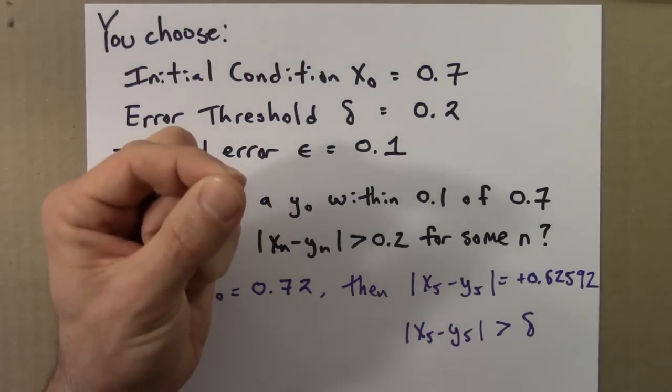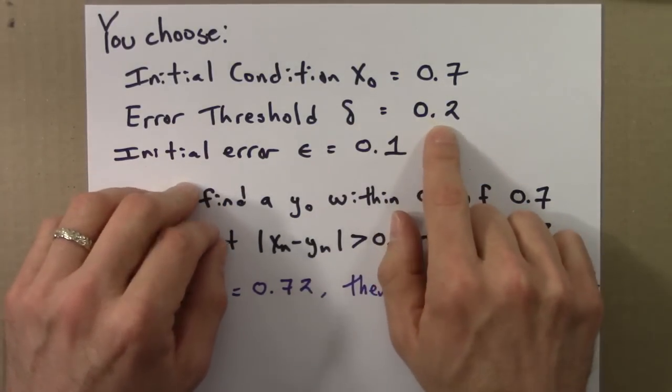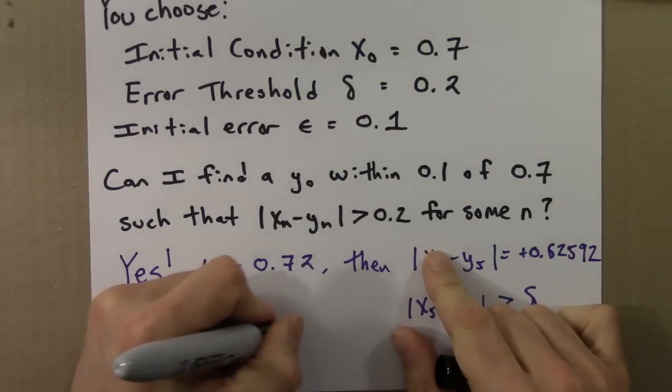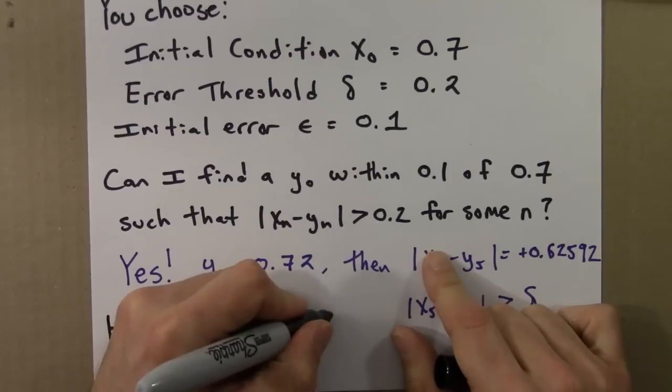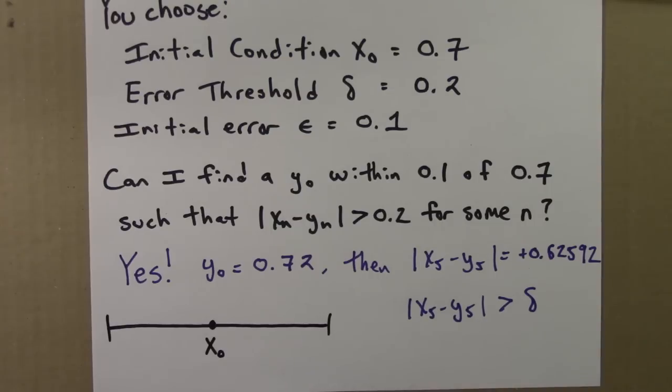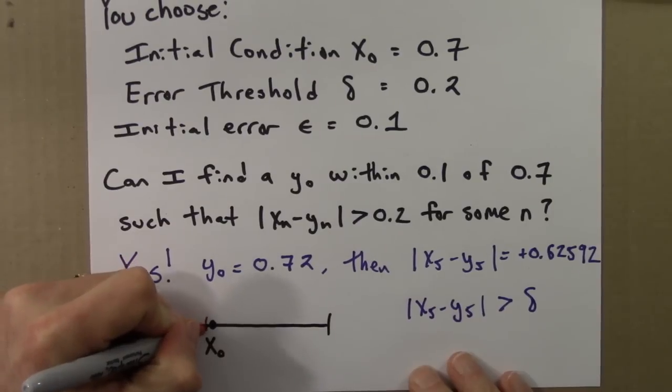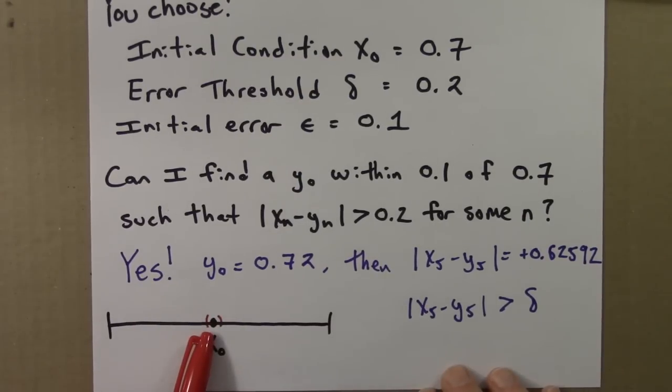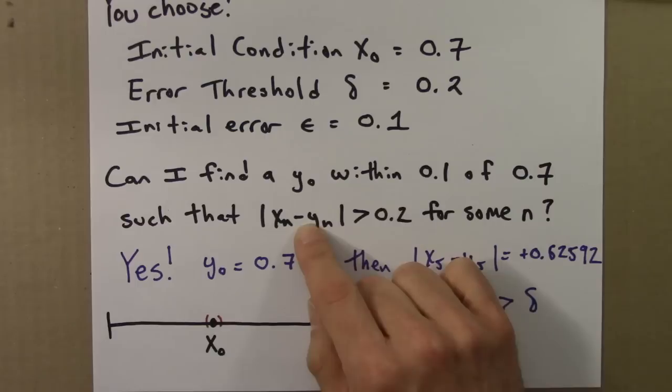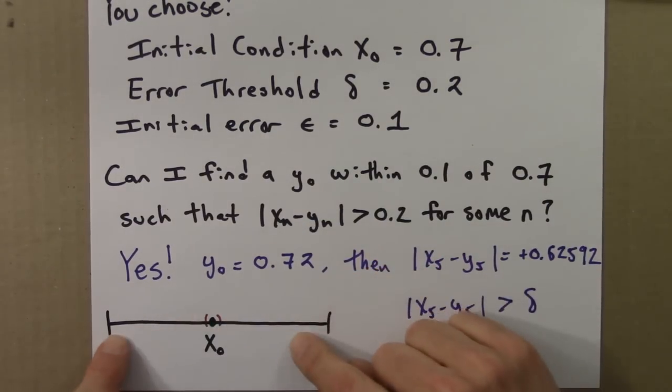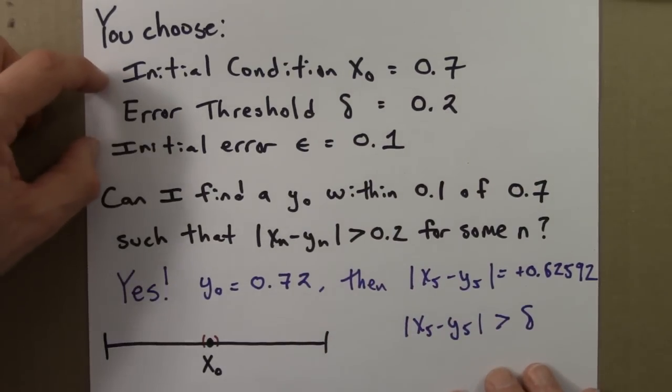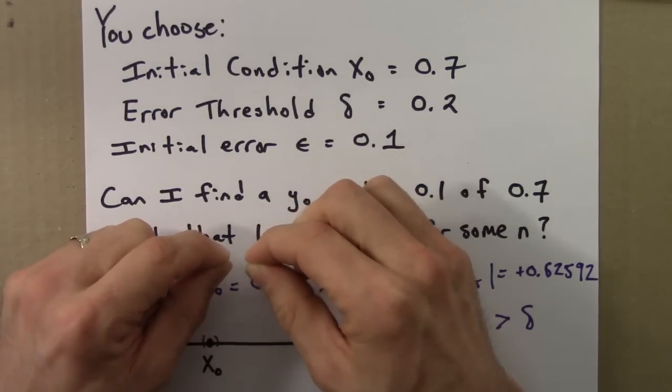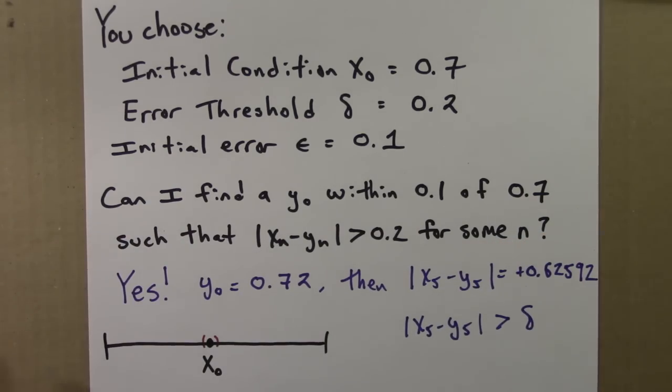What this means is that any initial condition you choose—and you can choose a really big error threshold, 0.9, 0.99 if you wanted, and you could choose a really small epsilon—like here's the initial condition x₀, and you choose that, and then there's going to be some little thing, this will be x₀ plus epsilon, x₀ minus epsilon. Somewhere in here, I can find an initial condition y₀, such that after some amount of iteration, these two points are arbitrarily far apart, any delta you choose. If a function has sensitive dependence on initial conditions, any initial condition very close to that initial condition is another initial condition which eventually gets very far away.